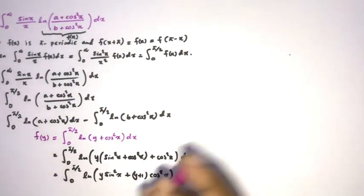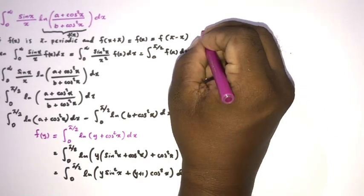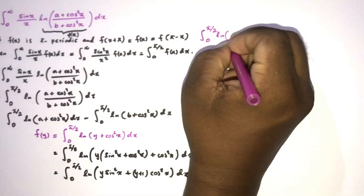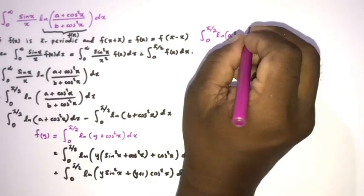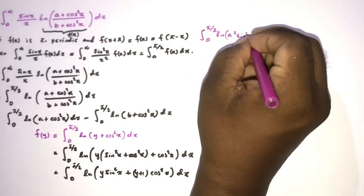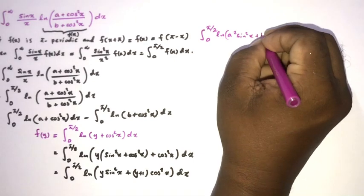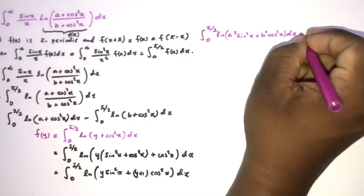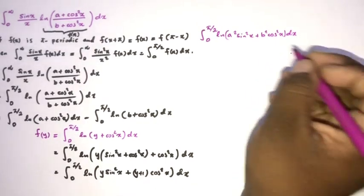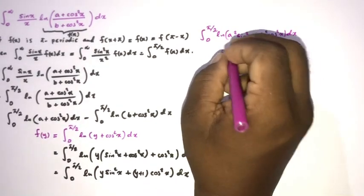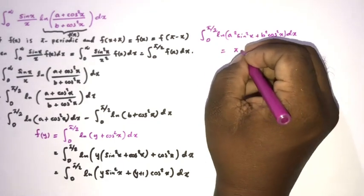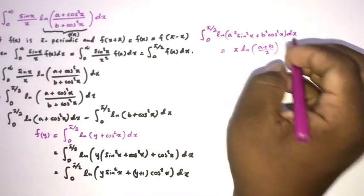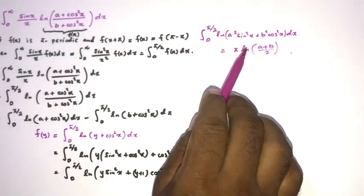Last week I evaluated this integral: the integral from zero to pi/2 of natural log(a²·sin²x + b²·cos²x) dx, and we proved this integral is equal to pi times ln((a + b)/2).